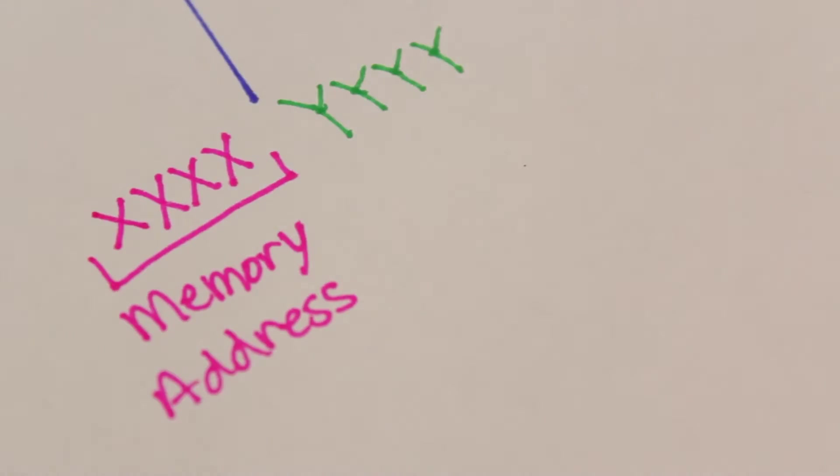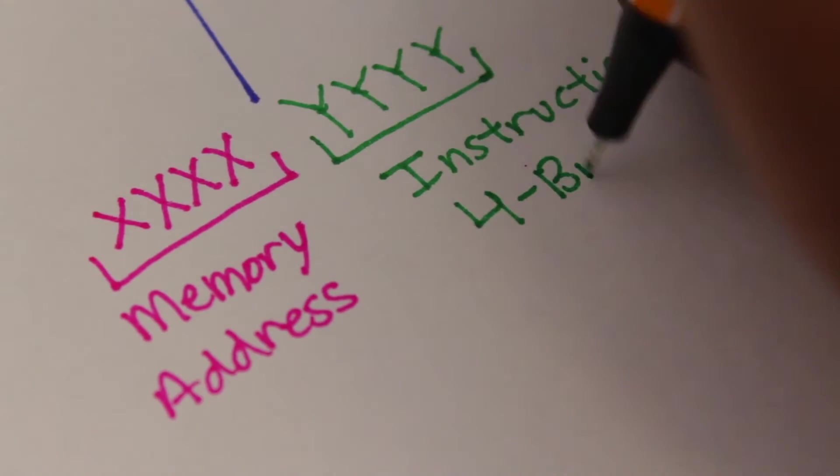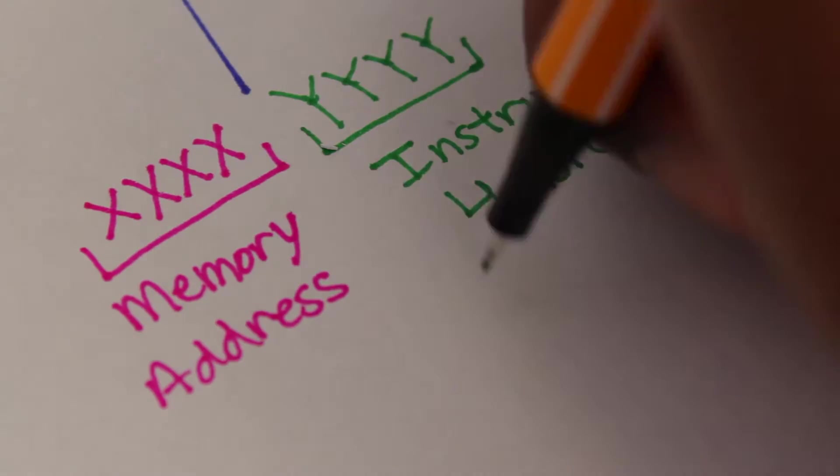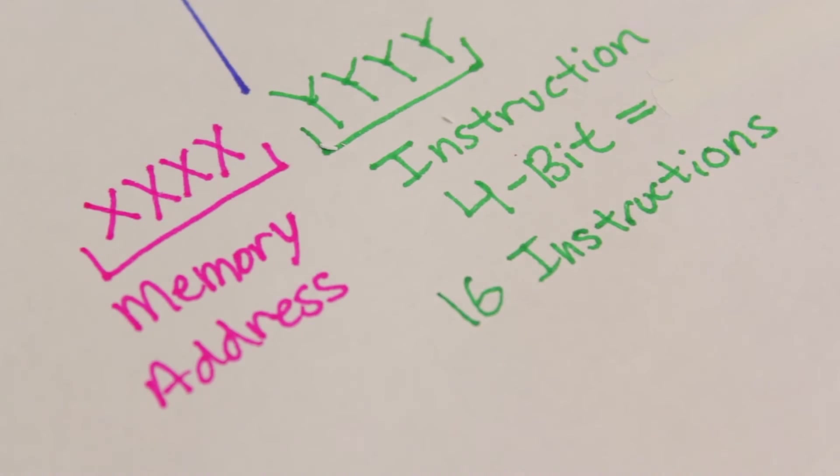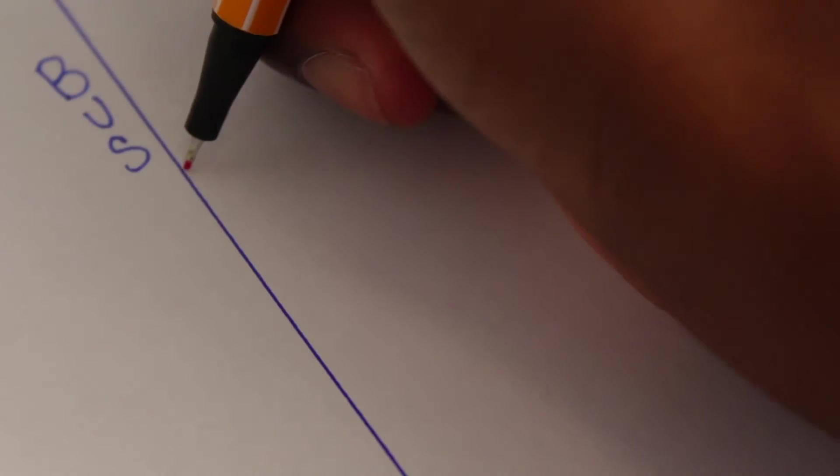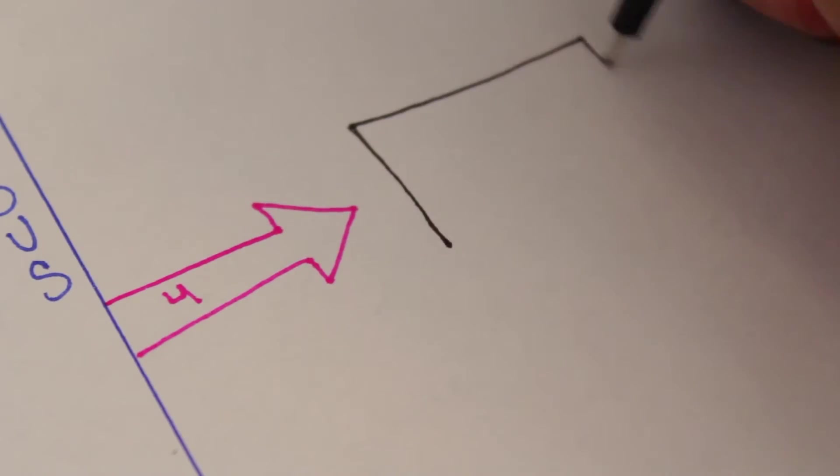We can set one group, the X group, to represent our memory address, then the second group, the Y group, to be our actual instruction. Note that because it's only four bits, we can only have a maximum of 2 to the 4, or 16 possible instructions.